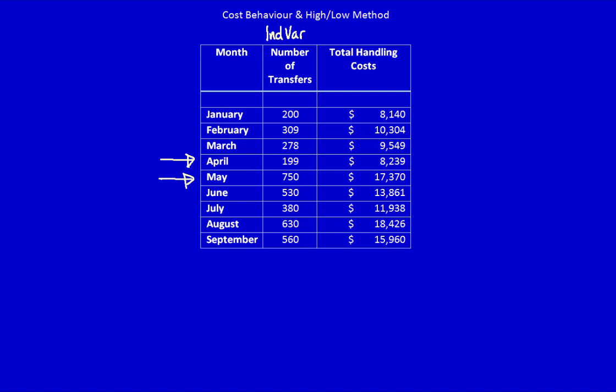Step 3: Take the related dependent variable. We know that the dependent variable is total handling costs. This is where students often get it wrong. They find the highest and lowest points for the dependent variable also. The highest and lowest points for the dependent variable would be January, 8,140, and August, 18,426. But that would be incredibly wrong.